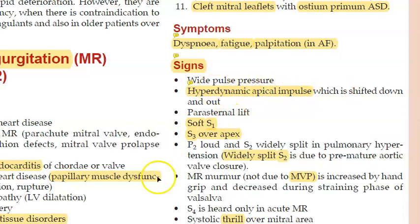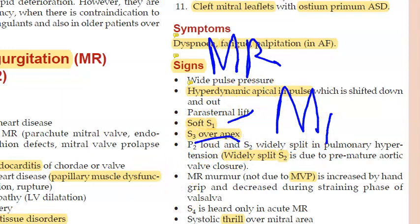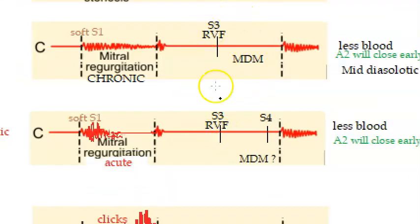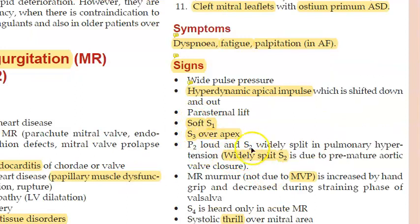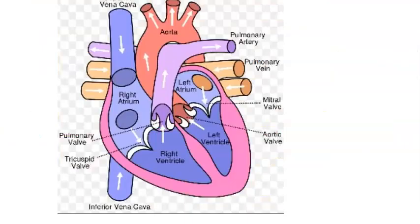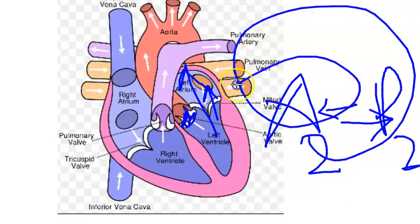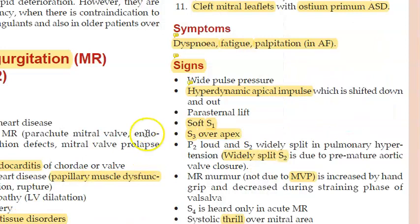Signs include a hyperdynamic apical impulse — unlike the heaving apical beat seen in aortic stenosis. There is a soft S1 because the mitral valve is not strong. S3 is heard over the apex due to rapid ventricular filling. Widely split S2 is also present in mitral regurgitation because less blood in the left ventricle causes the aortic valve to close faster, shifting A2.